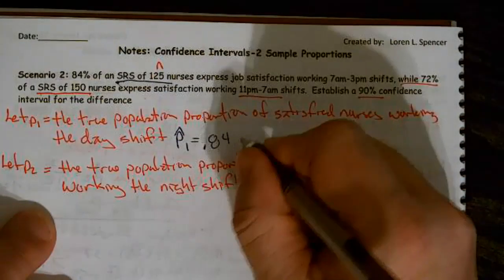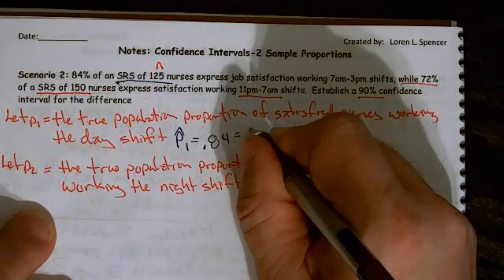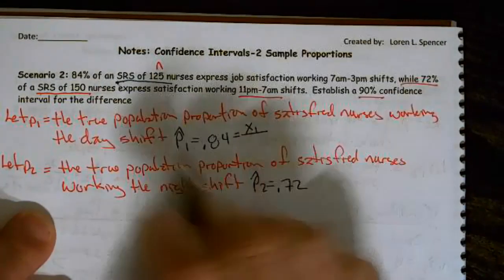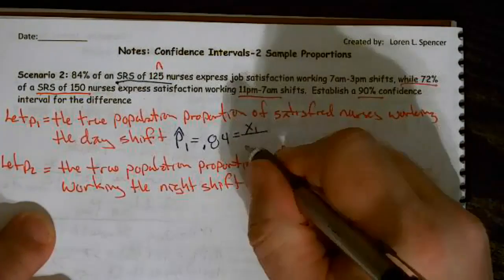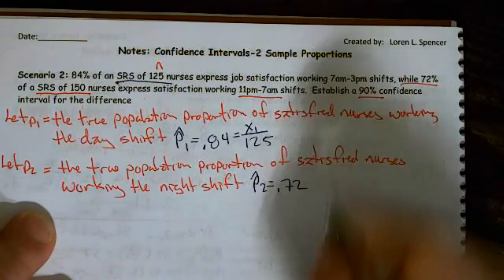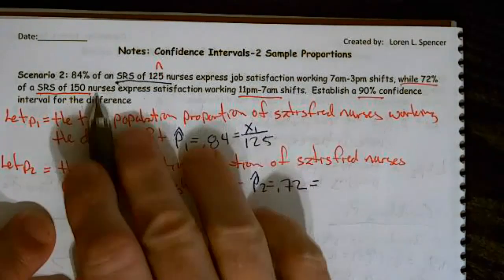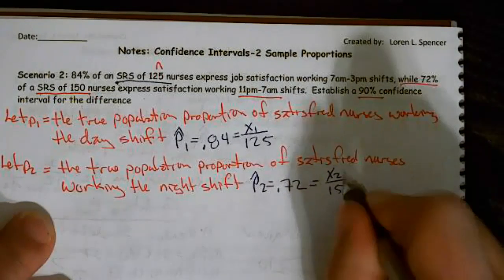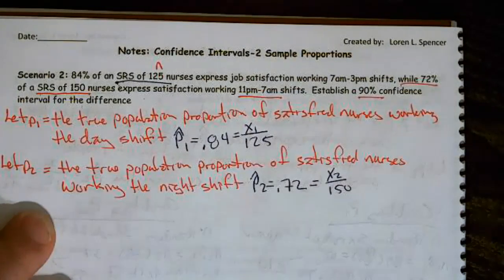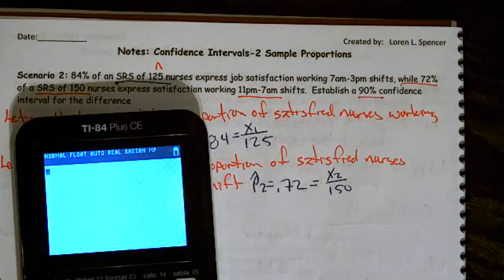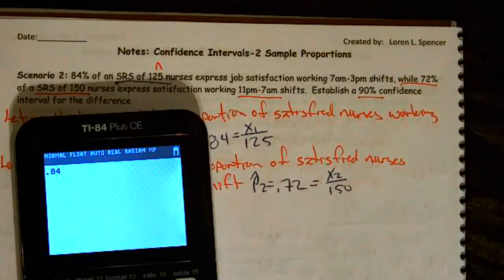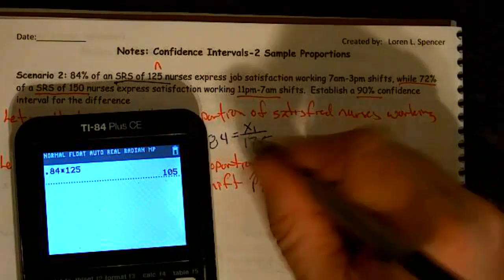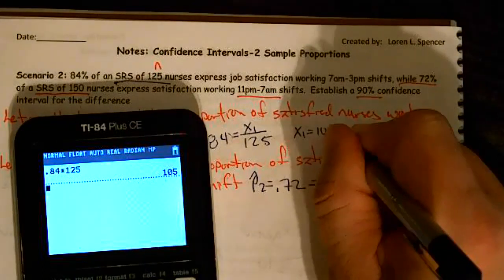Now, what we don't know is we don't know x. Well, remember, it's x1 over n1. Well, we know, so we don't know x1. We know n1 is 125. And we know this n2 is 150. If I multiply 84 and 125, and by the way, this is really important. You have to hear me out. If it ends up being a decimal, you're going to have to round. In this case, it's not a decimal. It's 105. So we know when I multiply these two, we get x1 equals 105.